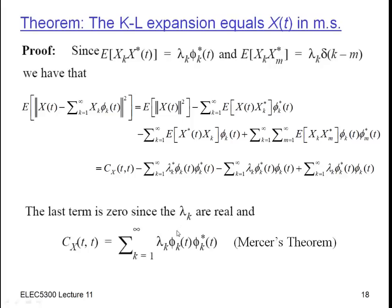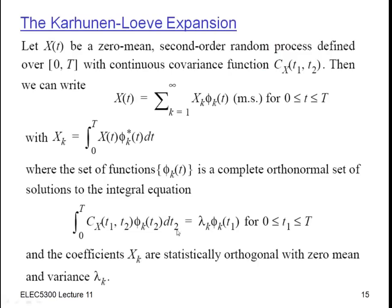So that's basically the Karhunen-Loeve transformation, and the key point there is that there's another expansion, it really depends on these phi sub k's. And so in the next section, we're going to look at some examples of this, but before we do that, we're going to look at the connection between this and the orthogonalization that we've seen before for finite vectors of random variables.